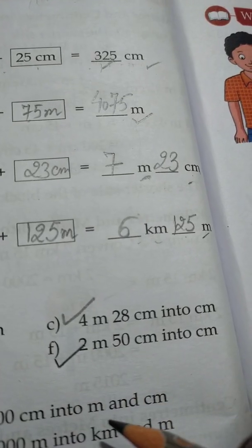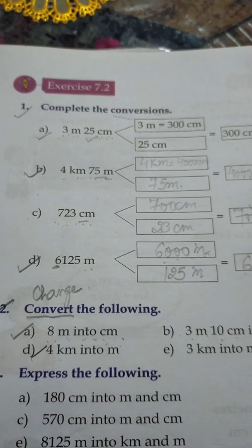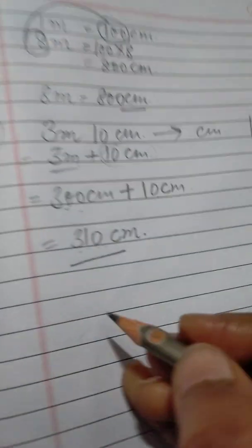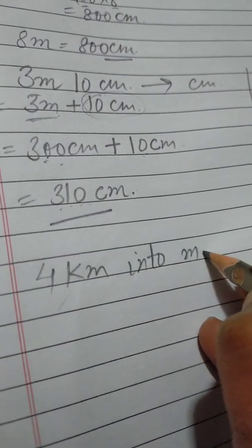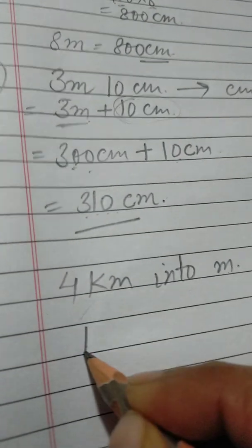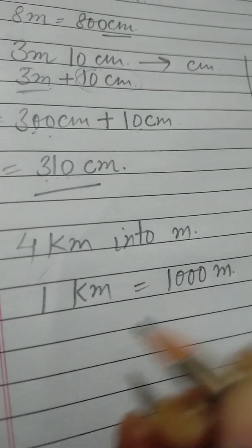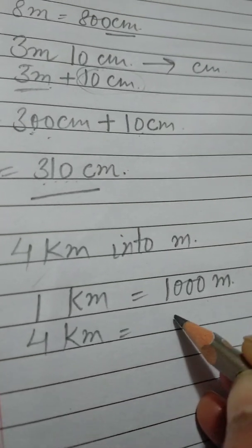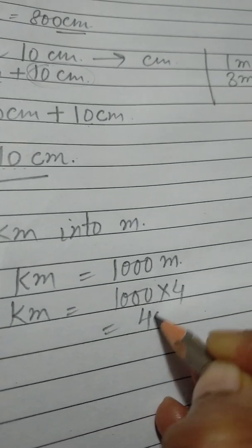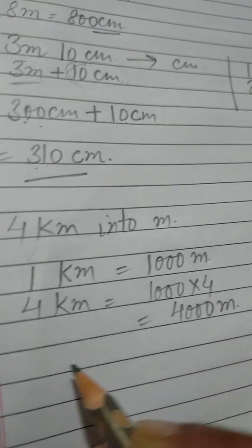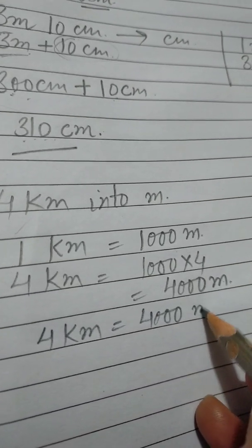Part d: 4 kilometer into meters. We must know 1 kilometer equals 1000 meters, so 4 kilometer equals 1000 multiplied by 4, which is 4000 meters. So we can say 4 kilometer is equal to 4000 meters.